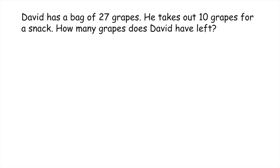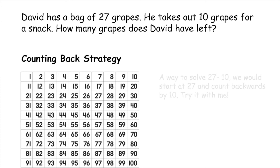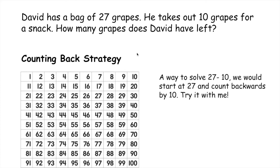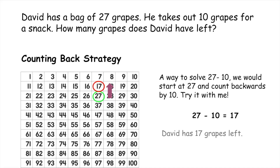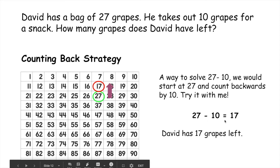Here is our problem: David has a bag of 27 grapes. He takes out 10 grapes for a snack. How many grapes does David have left? One way we can solve this problem is by using the counting back strategy with a hundreds chart. To solve, we start at 27 and count backwards by 10: 27... 17. That's counting backwards by one group of 10, and we stop at 17. So 27 minus 10 is equal to 17 — David has 17 grapes left.